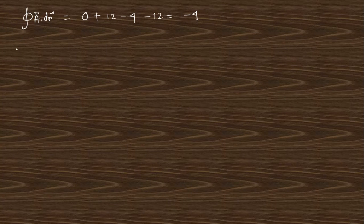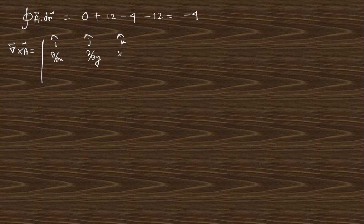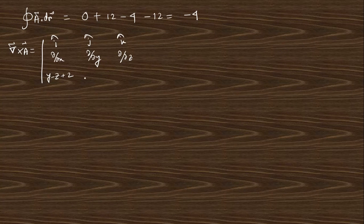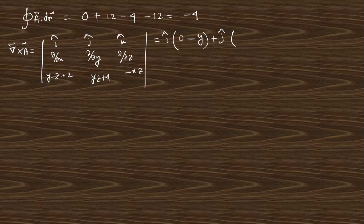Now calculate curl of A for the right-hand side. Using the determinant form with i-cap, j-cap, k-cap and del/dx, del/dy, del/dz. A vector components are: (y minus z plus 2), (yz plus 4), and (minus xz). Computing the curl: the i-cap component is 0 minus del/dz of (yz+4) which gives minus y; the j-cap component involves del/dz of the first component minus 1; the k-cap component is del/dx of (yz+4) minus del/dy of the first, giving 0 minus 1 = minus 1.